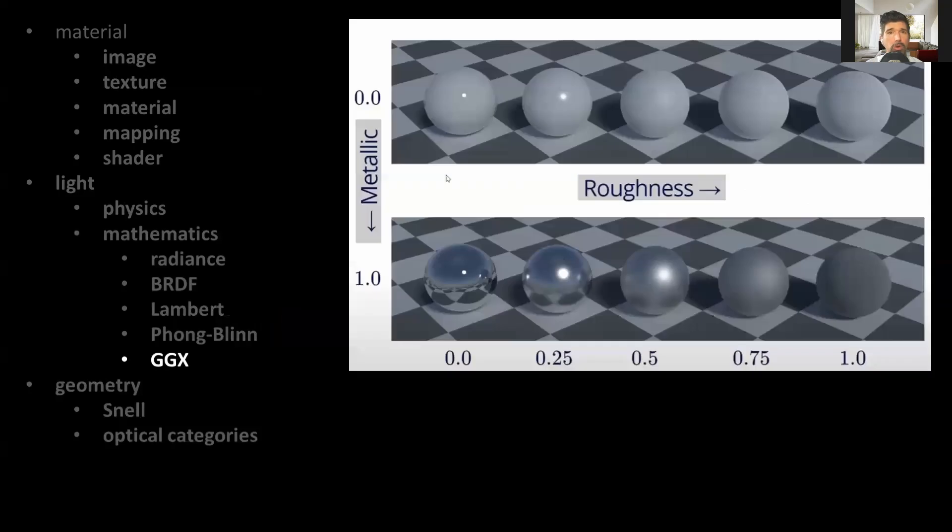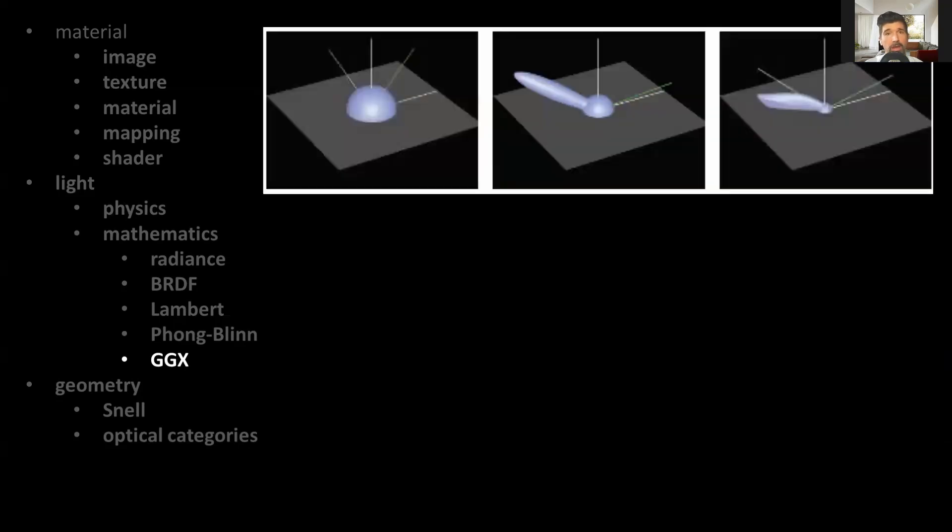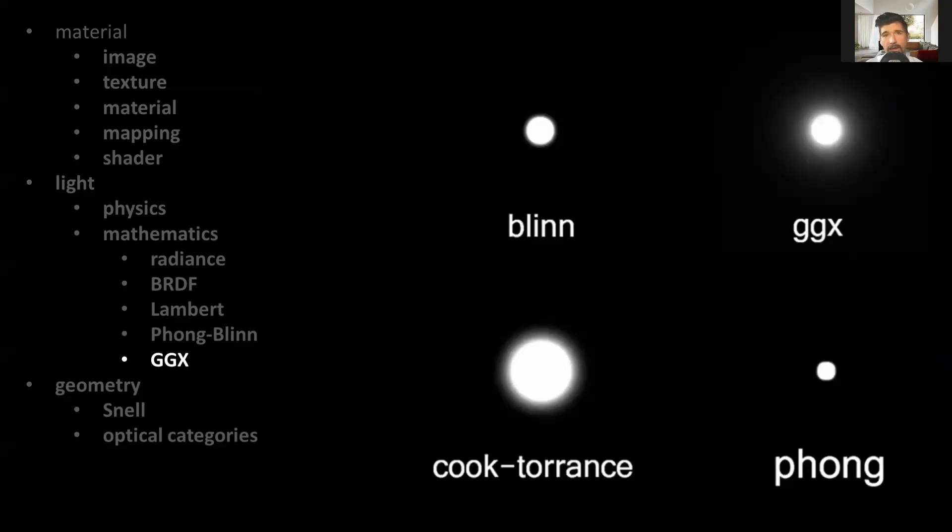This PBR approach was made available by a user-friendly interface where the metalness is set to either 0 or 1, and the roughness is placed from 0 to 1 depending on how scattering the material surface is. This causes the reflectance to be a bit different, which can be observed by a distinct halo around the highlight.